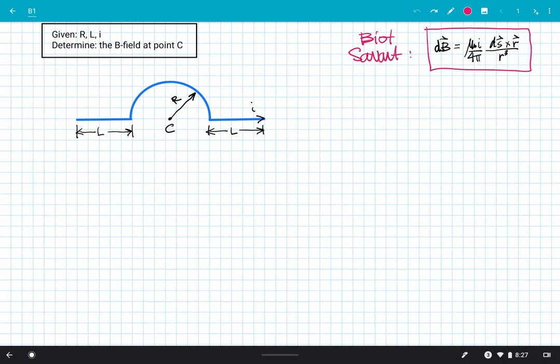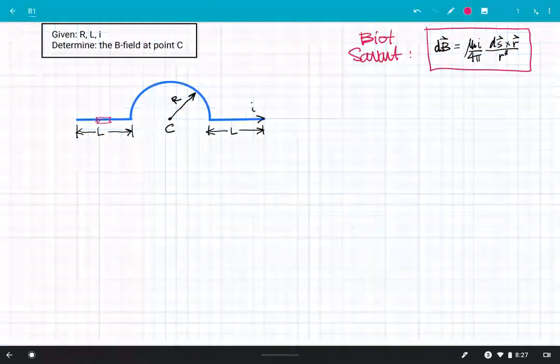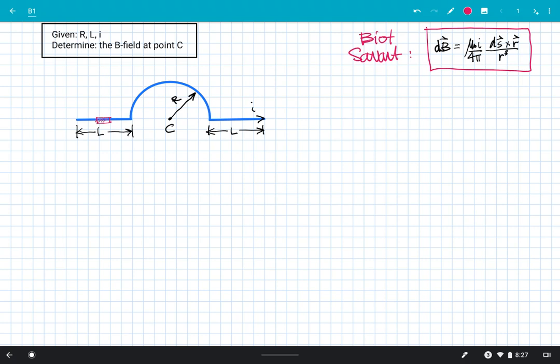We're asked to determine the B field at point C. If I think about Biot-Savart, I want to keep my eye on the ball, which is the cross product between DS and R. So if I start on the leftmost straight segment, I can draw in my DS here.